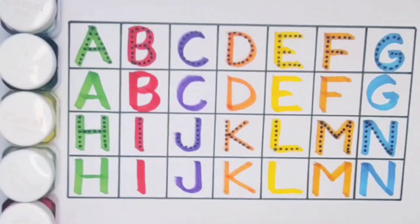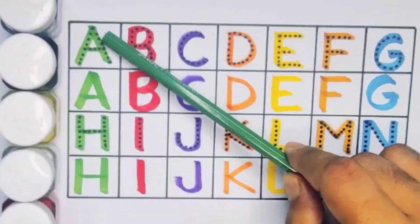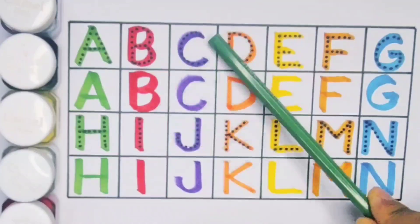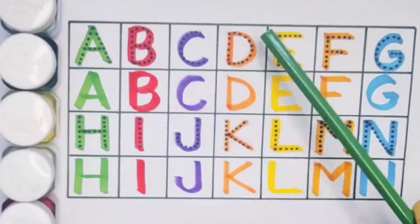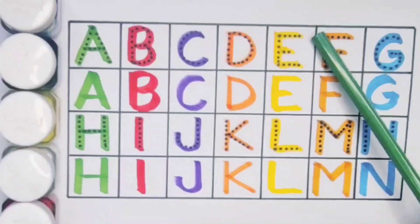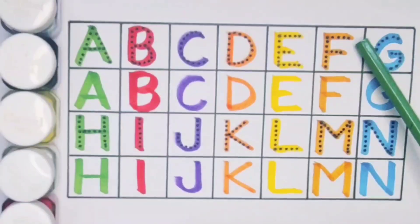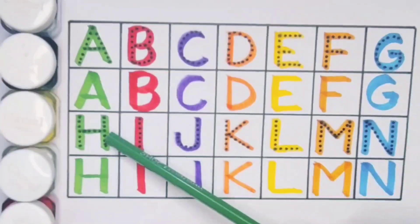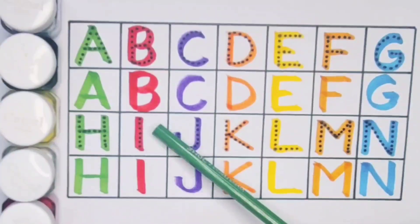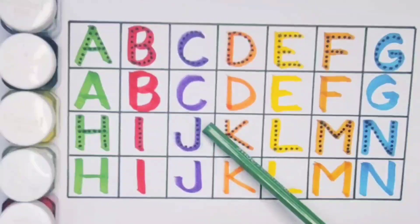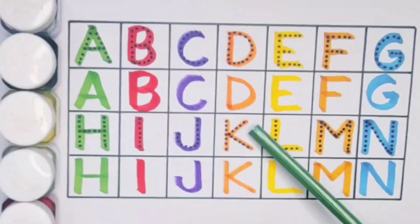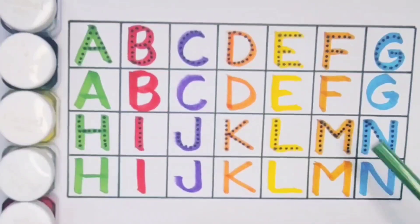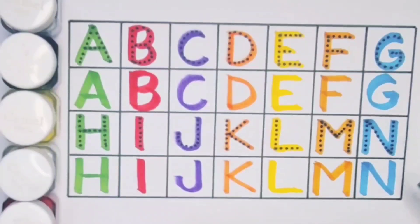What we learned? We learned: A for Aeroplane, B for Bus, C for Cow, D for Drum, E for Egg, F for Fire, G for Gorilla, H for Helicopter, I for Insect, J for Jug, K for Key, L for Lion, M for Mouse, N for Net.